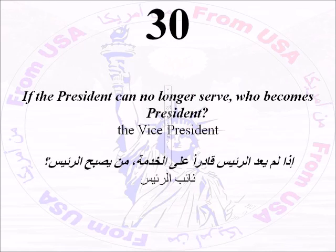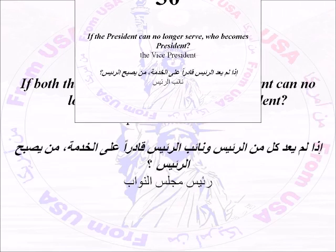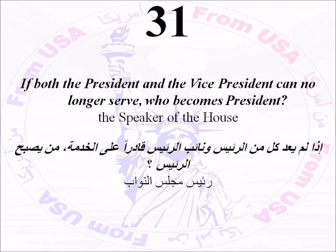Number Thirty: If the president can no longer serve, who becomes president? The vice president. Number Thirty-One: If both the president and the vice president can no longer serve, who becomes president? The Speaker of the House.